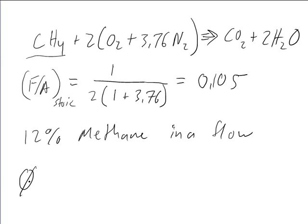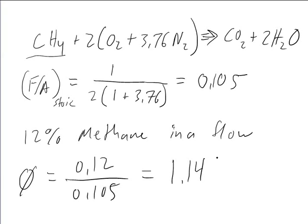So we would say phi is equal to 0.12 divided by 0.105. If we work that out, that's equal to 1.14, which is greater than 1, therefore we have a rich mixture.